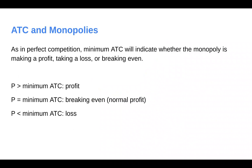With average total cost, again, like in perfect competition, that is going to tell us if the firm is making a profit, taking a loss, or breaking even. So if price is greater than minimum ATC, the firm is making a profit.